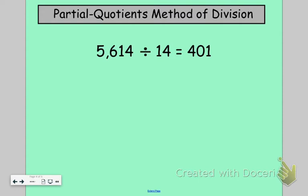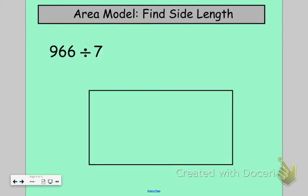I also want to show you one other method. And that is very similar to the area model for multiplication. But this time we're actually finding a side length. So let's take this problem of 966 divided by 7. And basically, I am going to put my 7 over here on the left-hand side.